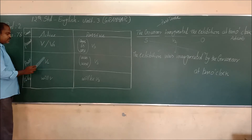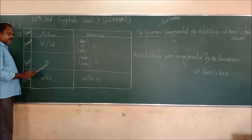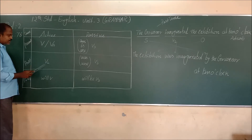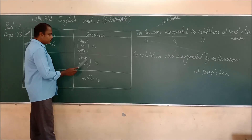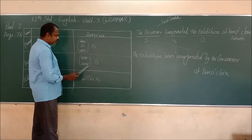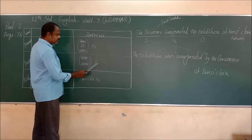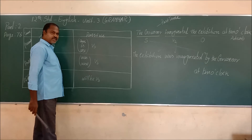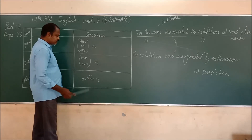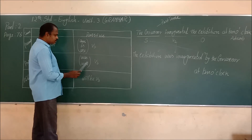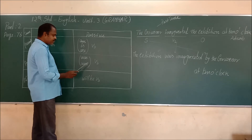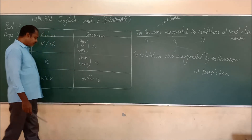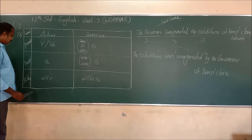For past tense, the sentence will have V2 — a past tense verb. We have to change it to: was/were + V3, where V3 is the past participle. 'Was' is used for singular and 'were' is used for plural or the plural form.